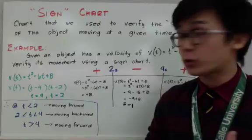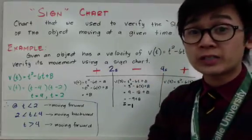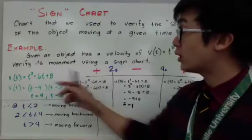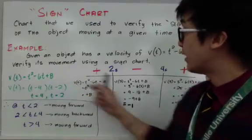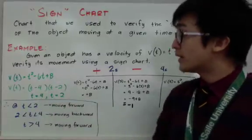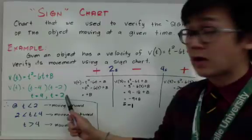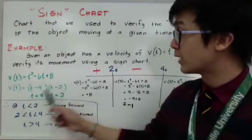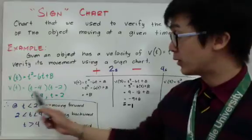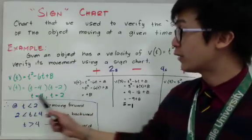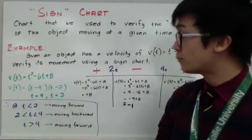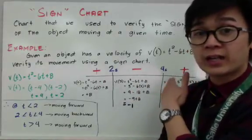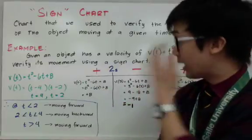Since velocity is already given, we don't need to take the derivative. We need our velocity to verify the signs for t equals 4 and t equals 2. To get those values, we solve the quadratic equation t² - 6t + 8 by factoring, giving us (t - 4)(t - 2). Using the zero product property, we get t = 4 and t = 2. These numbers are critical for our sign chart because they define the intervals to check whether the object is moving forward or backward.